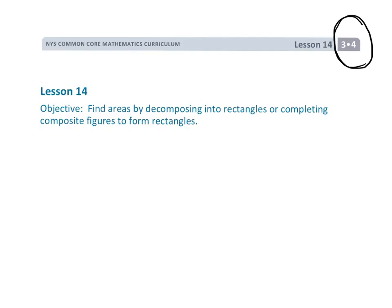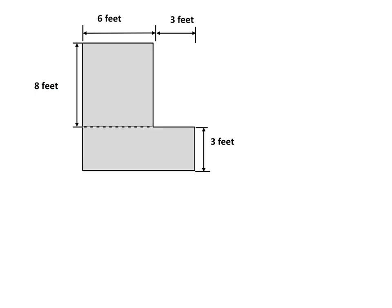This is Grade 3, Module 4, Lesson 14, continuing from Lesson 13, where we are finding the areas of figures by cutting them — decomposing them — into smaller rectangles, or by using subtraction: completing the rectangle and then subtracting the missing piece. On this problem, the dotted line is really telling us to use the addition method.